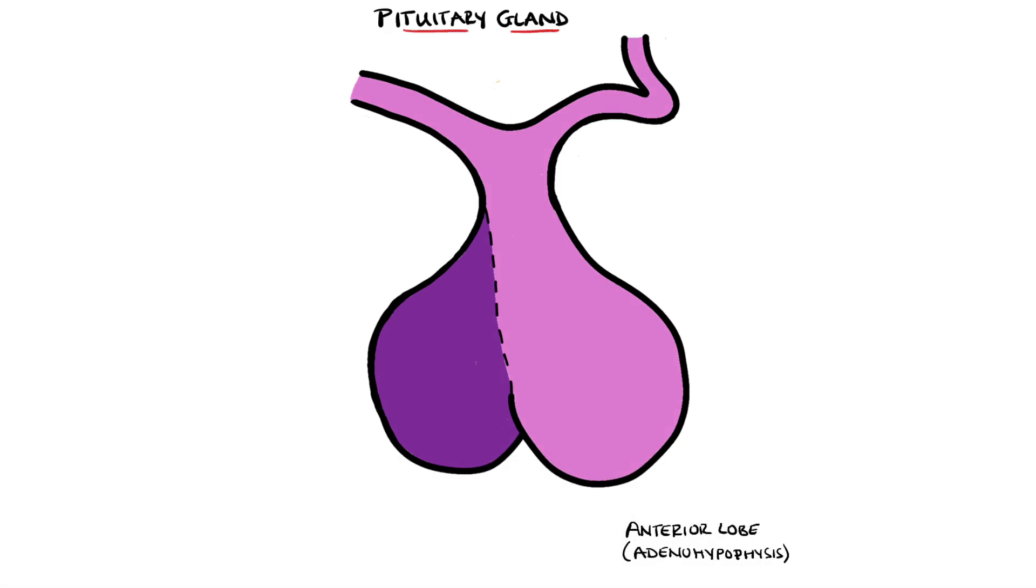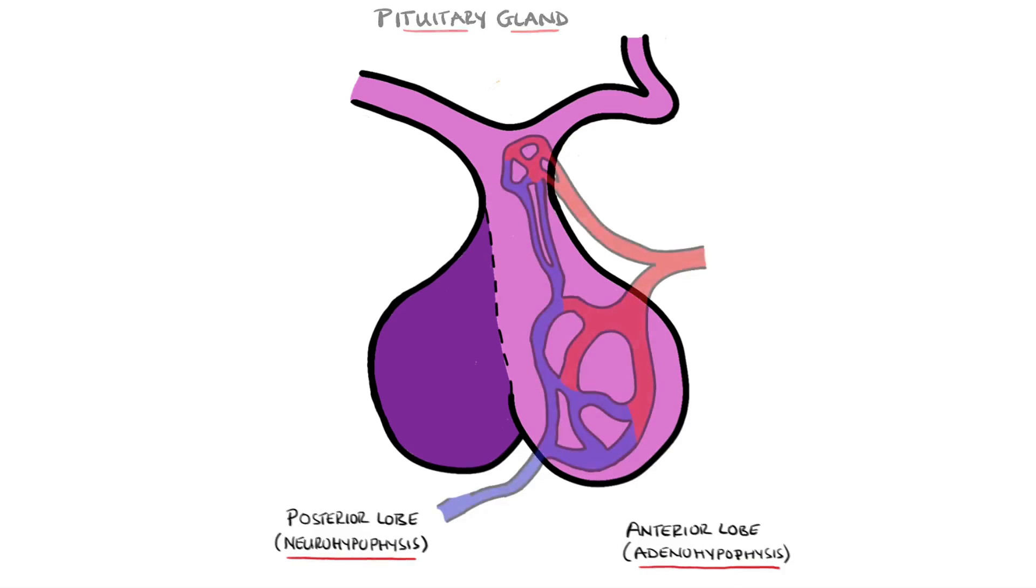The pituitary is divided into the anterior and posterior lobes, also known as the adenohypophysis and neurohypophysis. The functions of the two are similar, to secrete hormones into the blood.